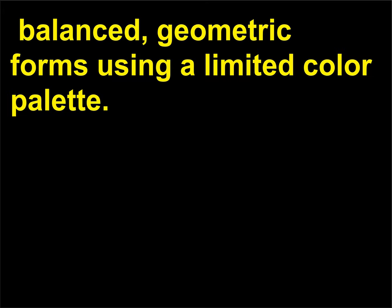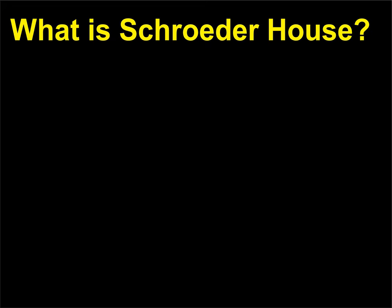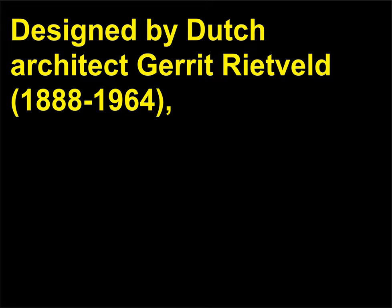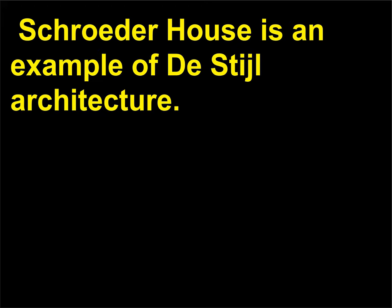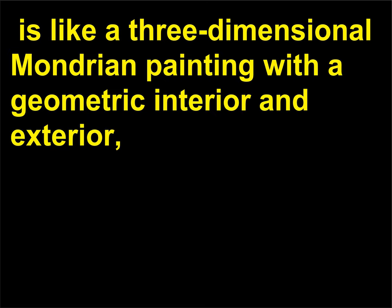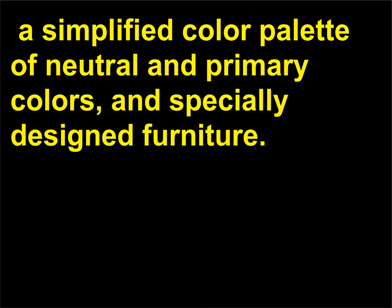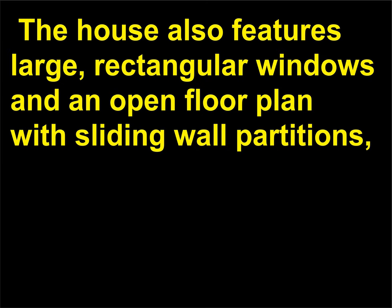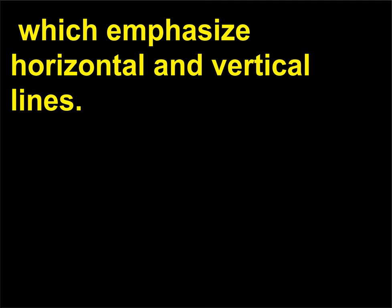What is the Schroeder House? The Schroeder House is an example of De Stijl architecture. Built in Utrecht in the Netherlands, it is like a three-dimensional Mondrian painting with a geometric interior and exterior, a simplified color palette of neutral and primary colors, and specially designed furniture. The house also features large, rectangular windows and an open floor plan with sliding wall partitions, which emphasize horizontal and vertical lines. The design for Schroeder House inspired a style of architecture known as the International Style.